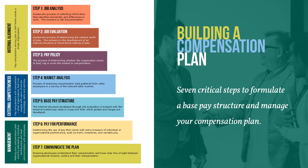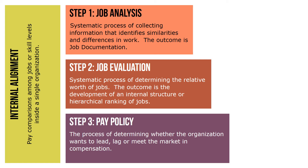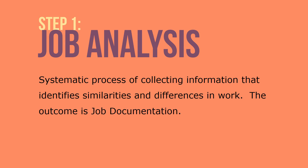Let's take a look at each step. First, internal alignment: pay comparisons among jobs or skill levels inside a single organization. How differently should the different types and levels of skills and work be paid within an organization? Internal alignment includes the steps of job analysis, job evaluation, and pay policy identification. Step 1 is job analysis — the systematic process of collecting information that identifies similarities and differences in work. The outcome of job analysis is job documentation or job descriptions.